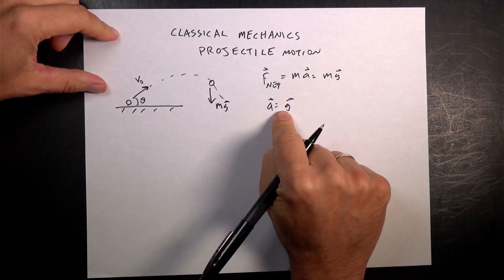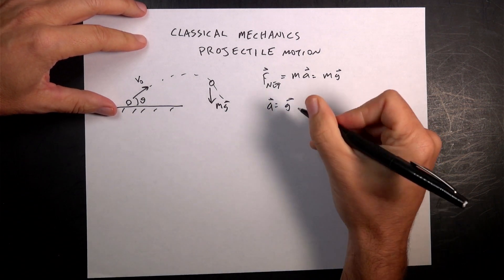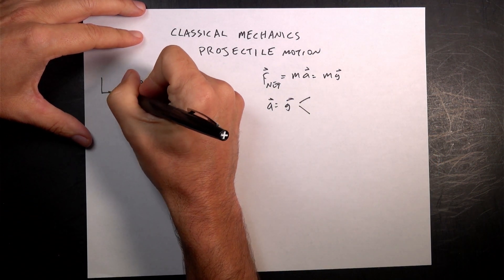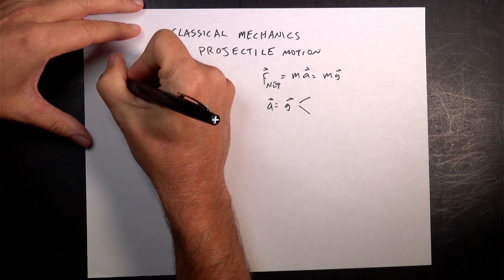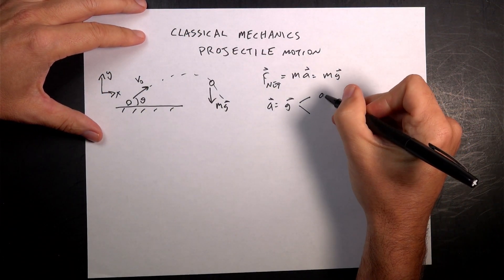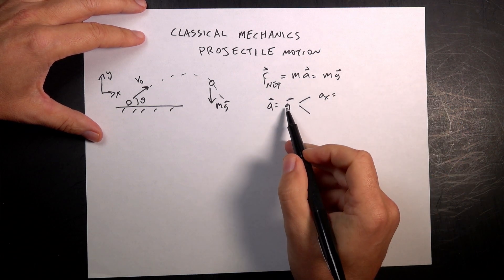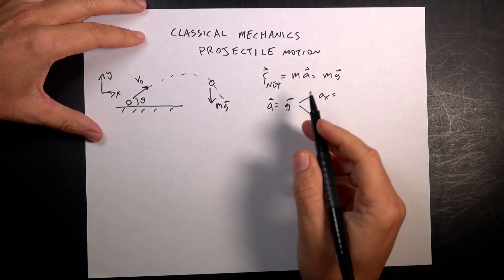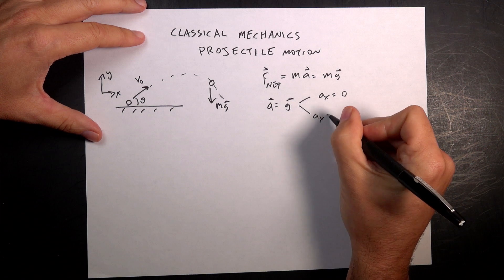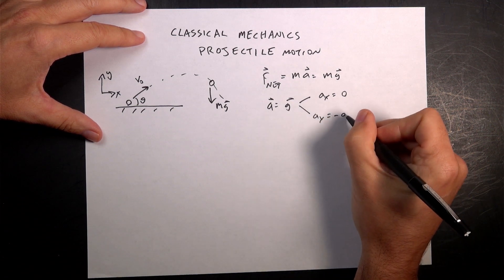But this is a vector equation. We like to write this as two scalar equations in the x and the y direction. So ax equals the x component of the gravitational field, which is zero. And ay equals the y component of the gravitational field, which is negative g.